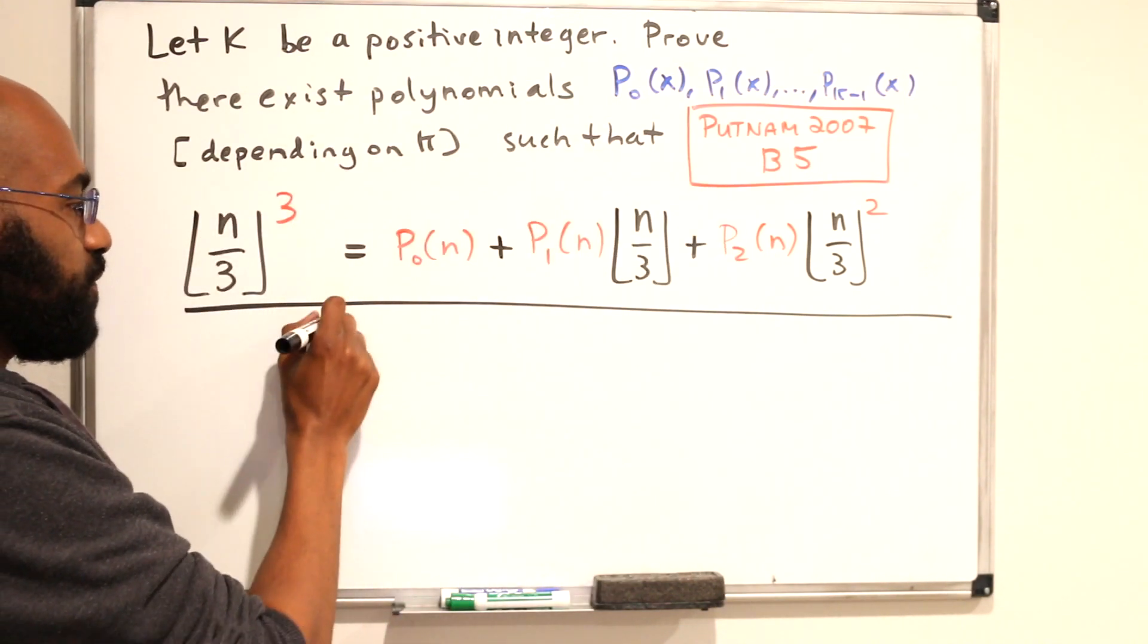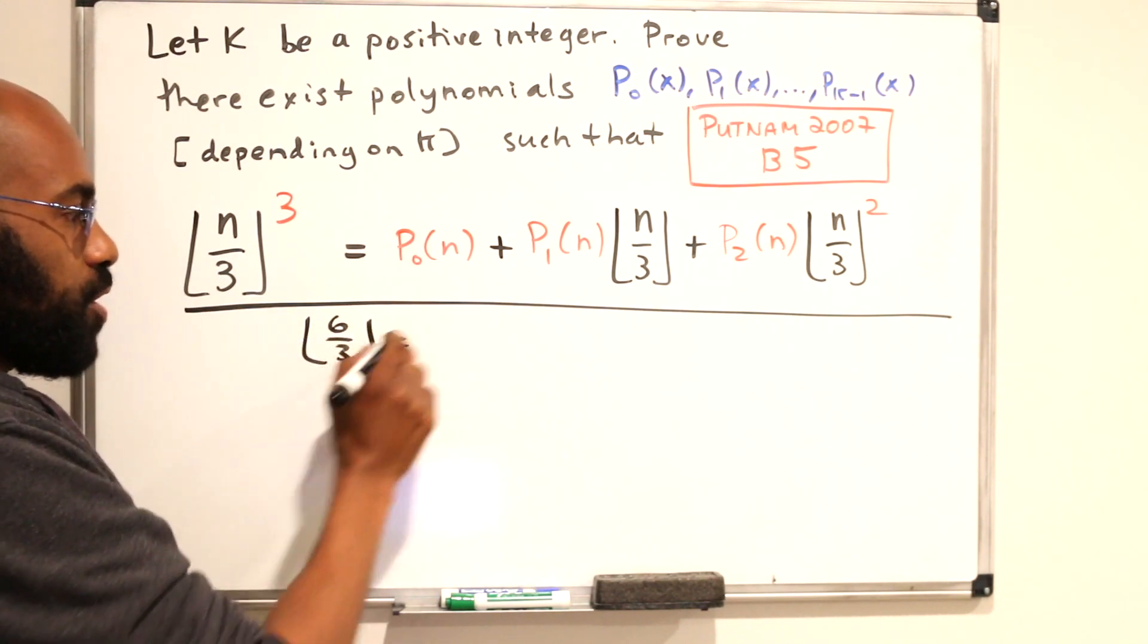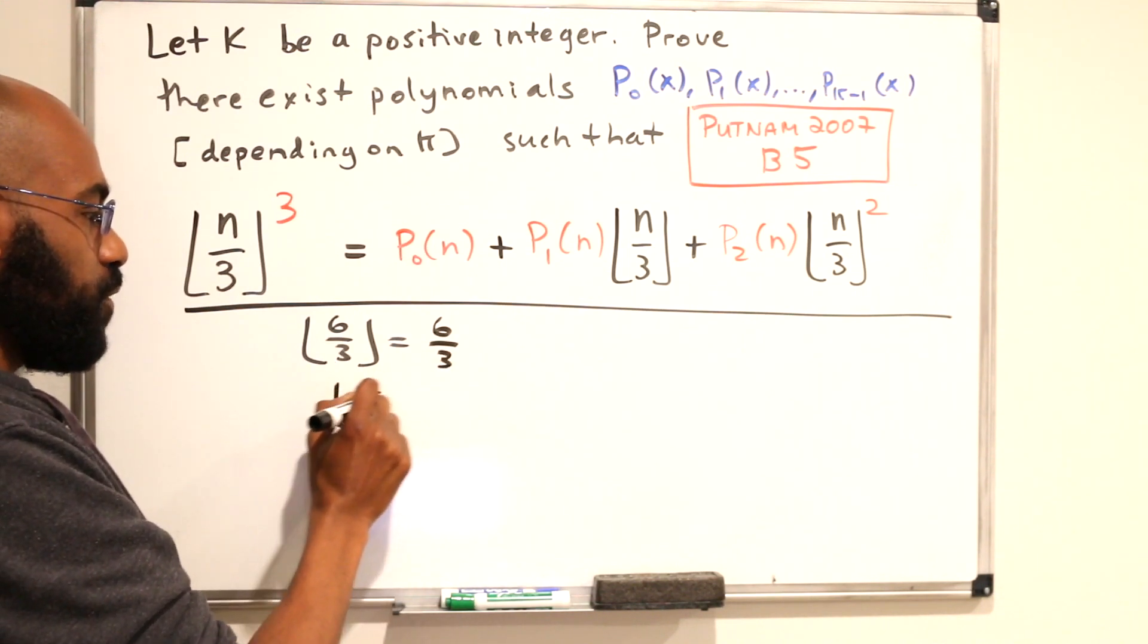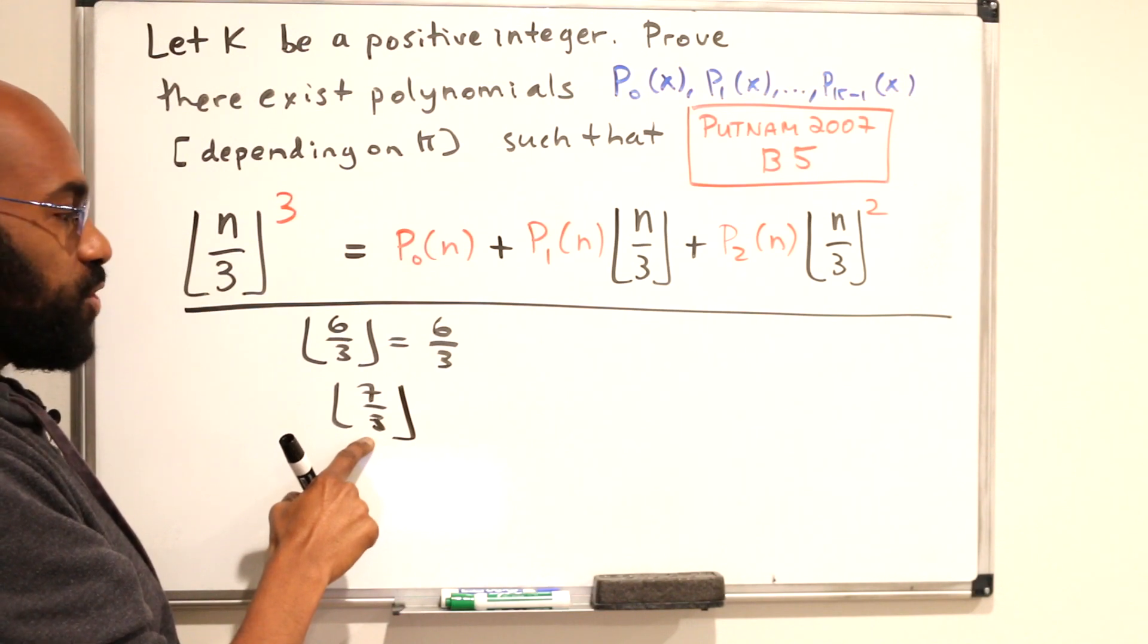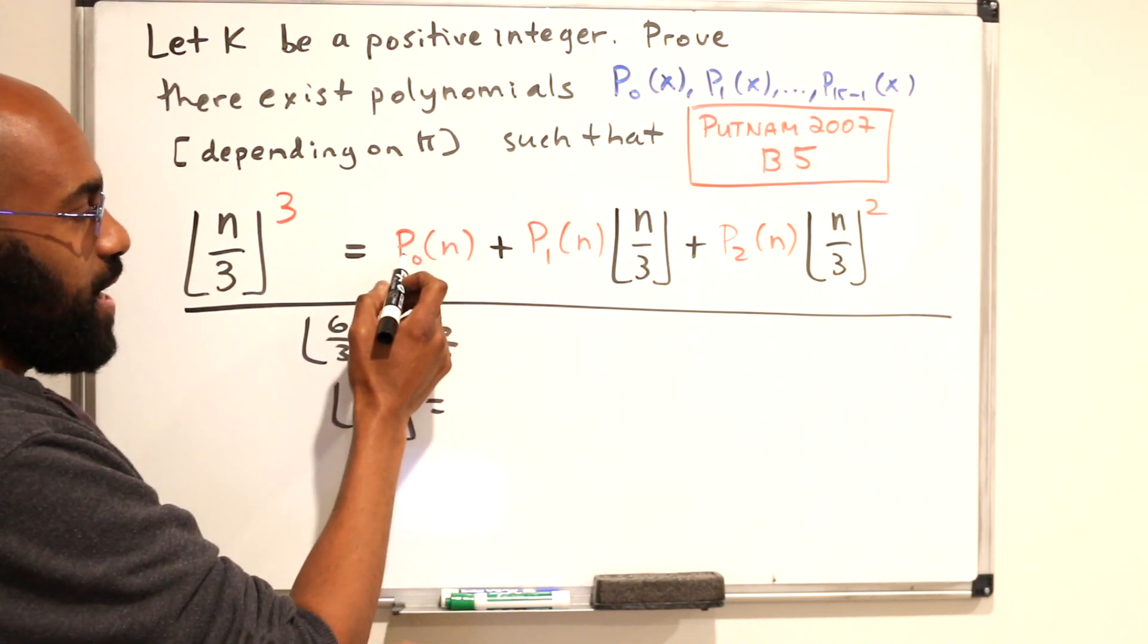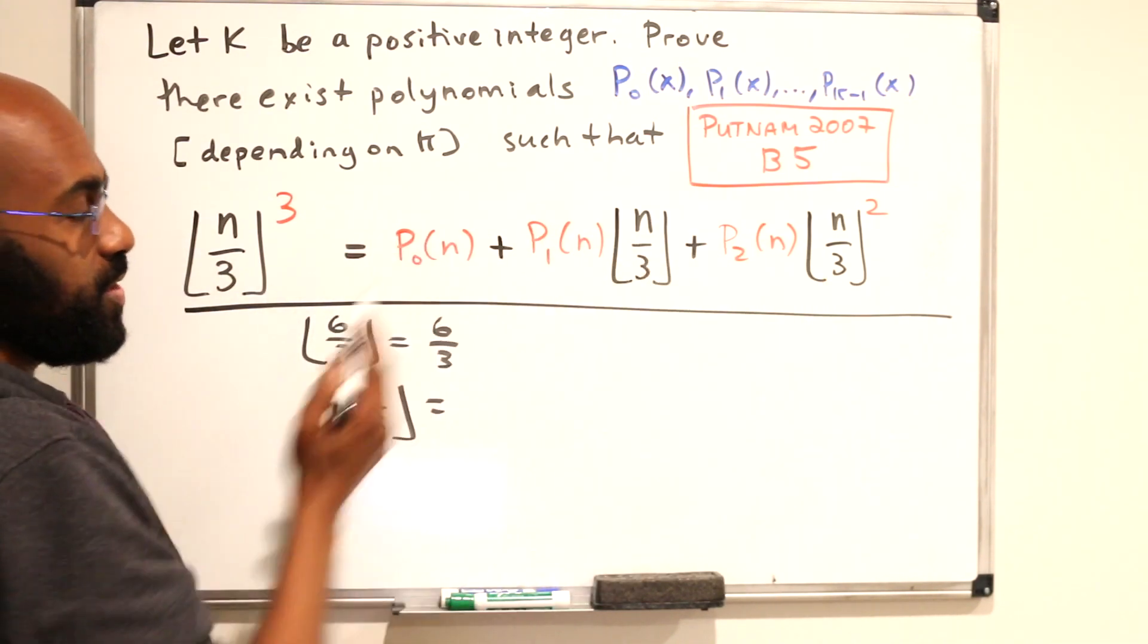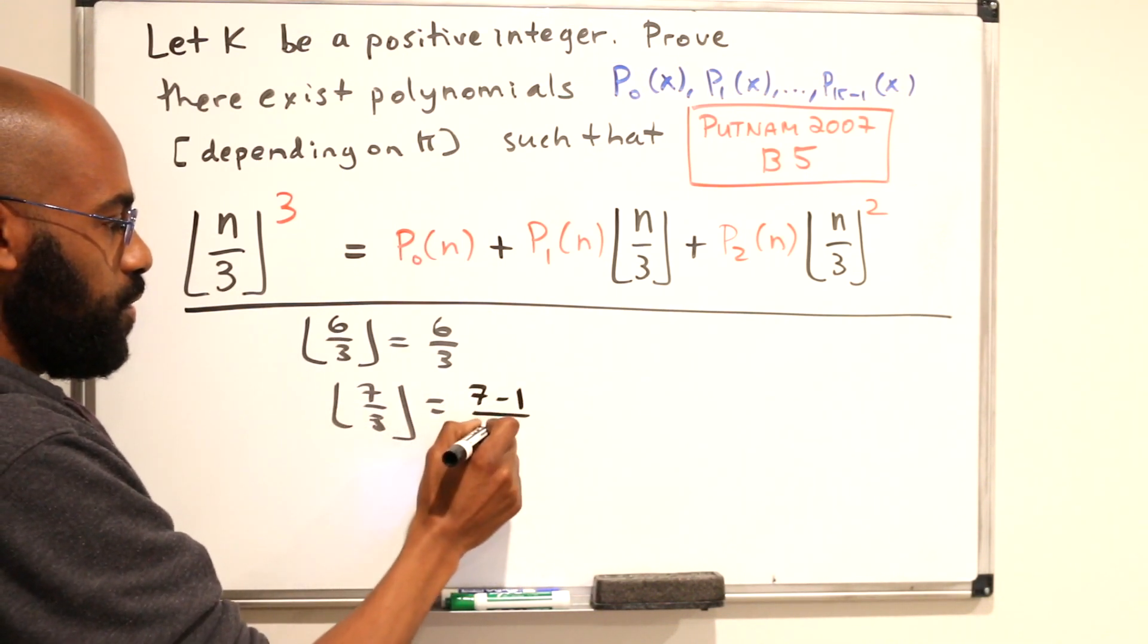So first, let's look at the floor of 6 over 3. That's actually an integer already, so this is actually 6 over 3. What about the floor of 7 over 3? This number is just slightly bigger than 2, so this number should be 2, which I can represent in terms of n. It makes sense to represent it in terms of n to try to get an expression like this because we have expressions in terms of n here with these polynomials. So I'll write this as 7 minus 1 over 3.